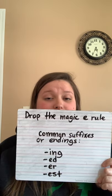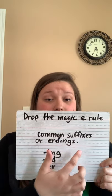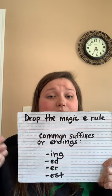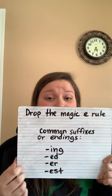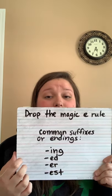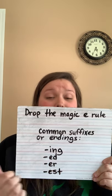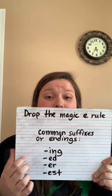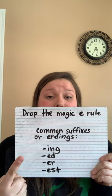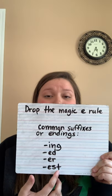This is when you have a magic E word and you are going to add a suffix or an ending to the word, and you have to drop that magic E before you add the ending. Some common endings that we use all the time are: ing, ed — but remember ed has three sounds: ed says 'ed,' ed says 'd,' and ed says 't' — also er and est.